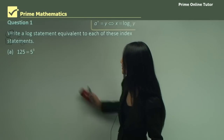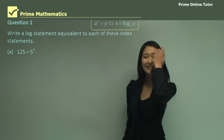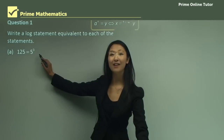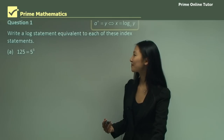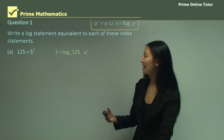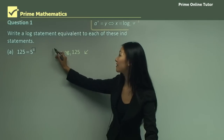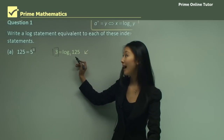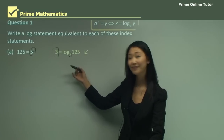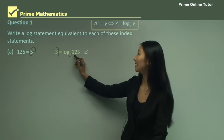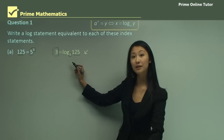Question one asks us to write a log statement equivalent to each index statement. In part a, we have 125 equals 5 to the power of 3. The index is 3, so we write 3 equals the logarithm. The base is 5, which becomes the base of the logarithm. Finally, 125 moves over, giving us 3 equals log base 5, 125.